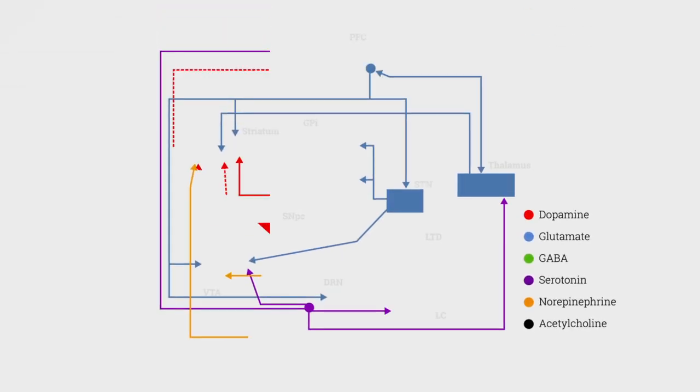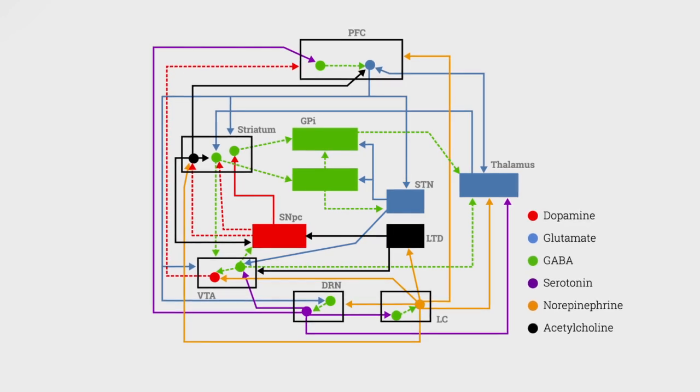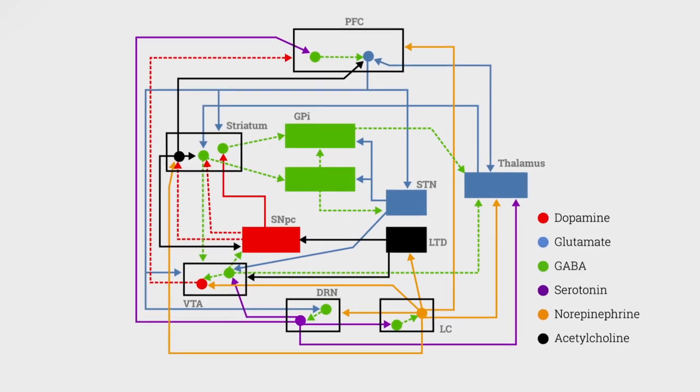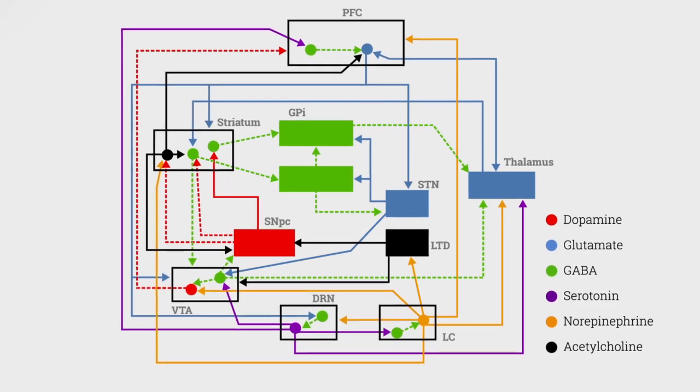They've data-mined thousands of studies on schizophrenia and brain chemistry. Then, they made a sophisticated matrix that simulates how the brain chemicals work together.